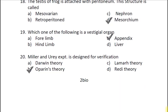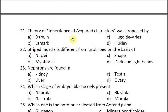Question twenty-one: Theory of inheritance of acquired characters was proposed by — A Darwin, B Lamarck, C Hugo de Vries, D Huxley. The correct answer is B Lamarck. According to Lamarckism, an organism can pass characters to its offspring through use or disuse — for example, explaining the long neck of the giraffe.